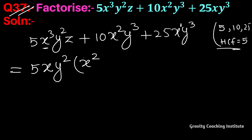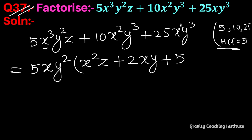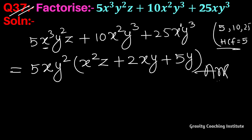Second वाले टर्म में 5 का table में 5×2=10, और x² से हमने x common लिया तो x बचेगा और y³ में से y² common लिया तो y बचेगा। और 25 में 5×5=25 होता है और x तो common है और y³ में से y² common लेने से y बचेगा। Which is the required answer.